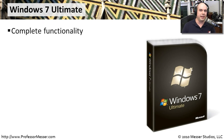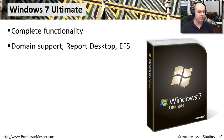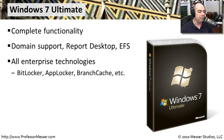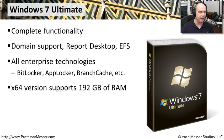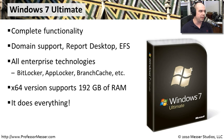With Windows 7 Ultimate, you get everything — it's a fully featured and complete version of Windows 7. You get support to log into and be a member of a domain, remote desktop, encrypting file services, plus all the enterprise platform features: BitLocker, AppLocker, BranchCache, and more. Both 32-bit and 64-bit versions are supported, with up to 192GB of RAM. If you have Windows 7 Ultimate on a machine, you can be assured that every possible functionality is built in.